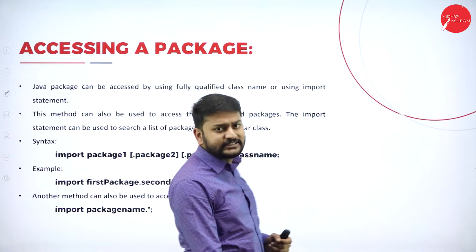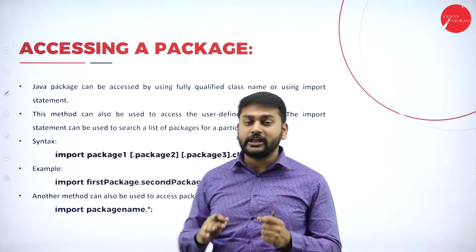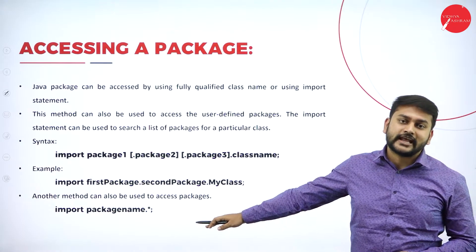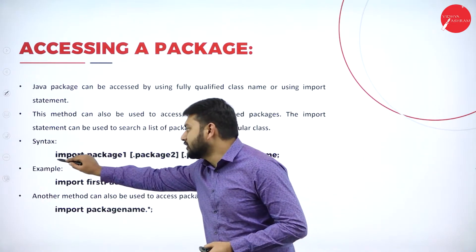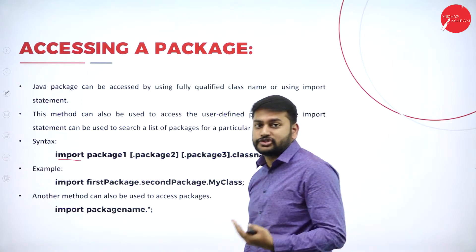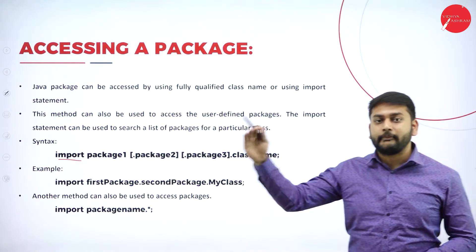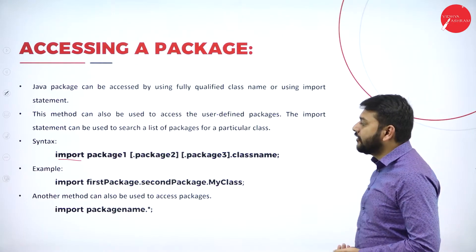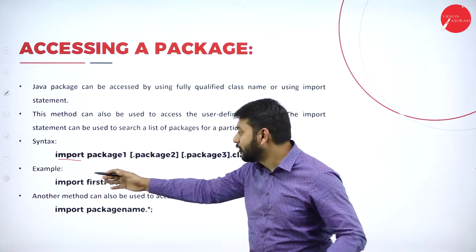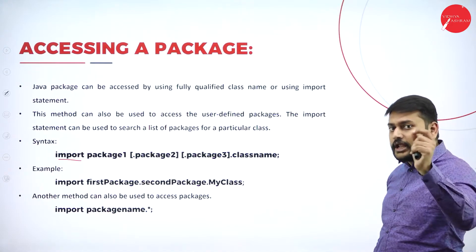Moving to the next important topic: accessing a package. How do we access a package? We use the keyword 'import'. If packages are stored inside other packages, I use the dot operator to access the particular package and class. For example, the syntax is: import package1.package2.package3.ClassName. What does this mean? I have the main package — I call it the first package. Inside it, I have stored the second package, and inside that I have the class name.